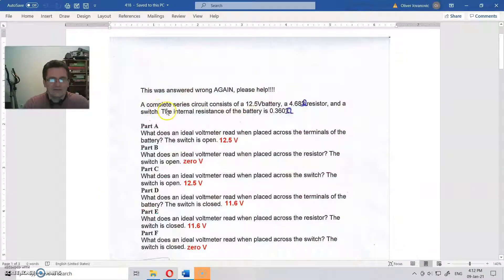A complete series circuit consists of a 12.5V battery, a 4.68Ω resistor, and a switch. The internal resistance of the battery is 0.36Ω. And there is a question with parts 1, 2, 3, 4, 5, 6.